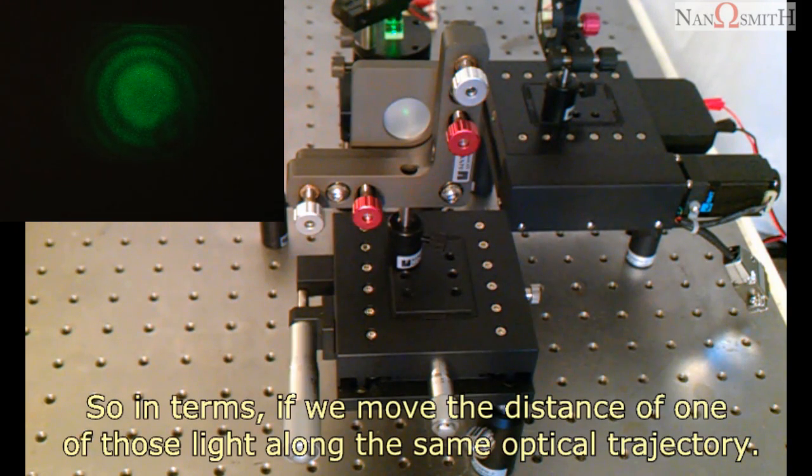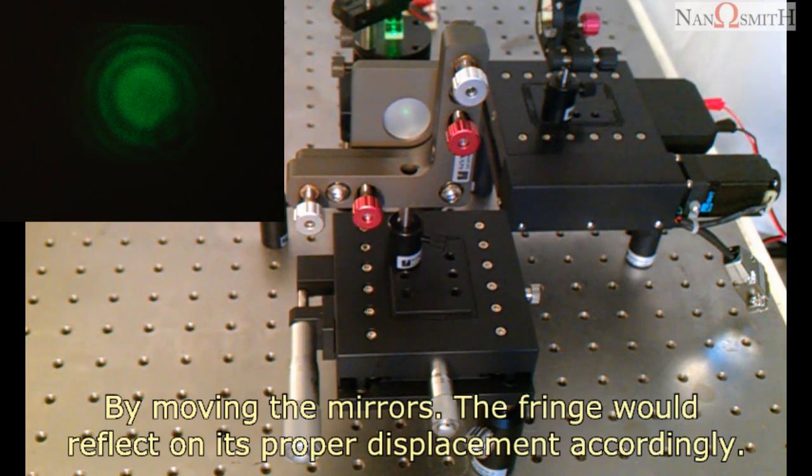So in terms, if we move the distance of one of those light along the same optical trajectory by moving the mirrors, the fringe will reflect on its proper displacement accordingly.